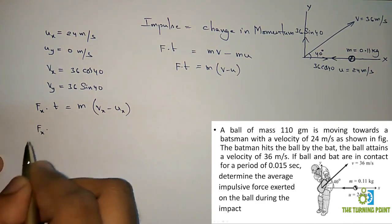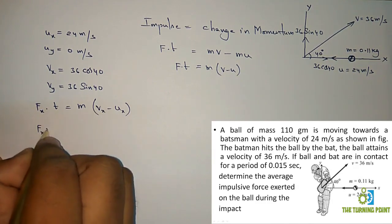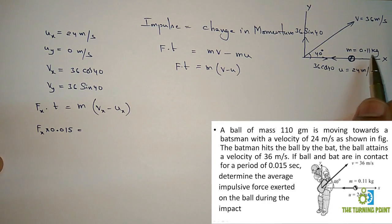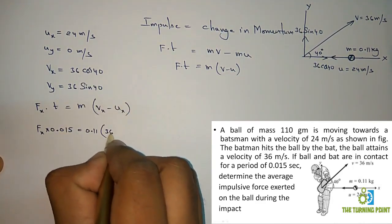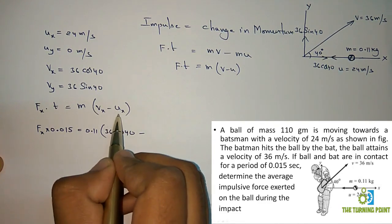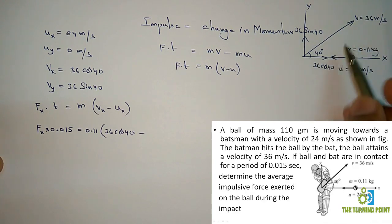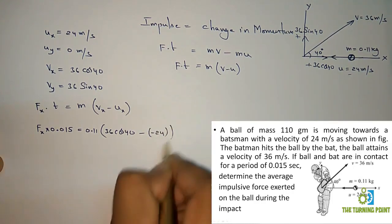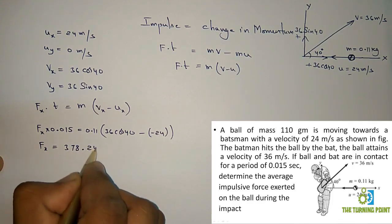To find the impulsive force along the x-direction: the contact time is 0.015 seconds, and the mass of the ball is 110 grams, i.e., 0.11 kg. So Fx × 0.015 = 0.11 × (36 cos 40° − (−24)). Note that the initial velocity is along the negative x-direction, so it is represented as −24. Simplifying, you get Fx = 378.24 newtons.